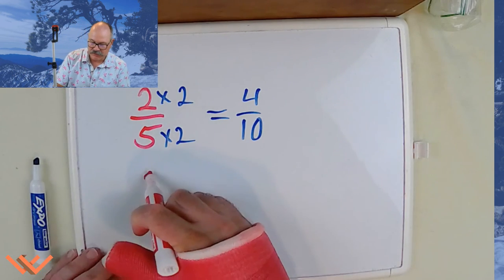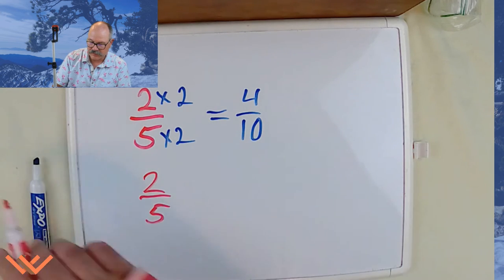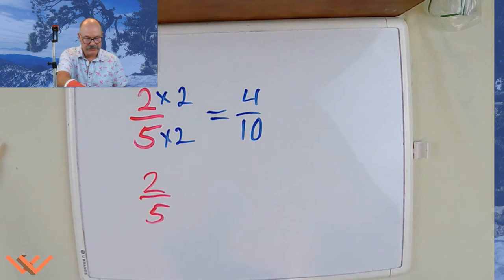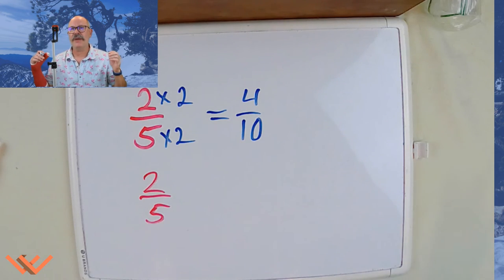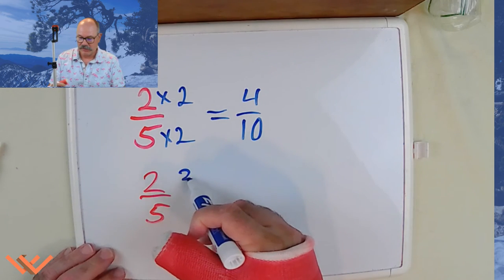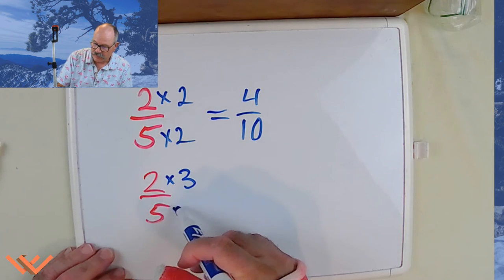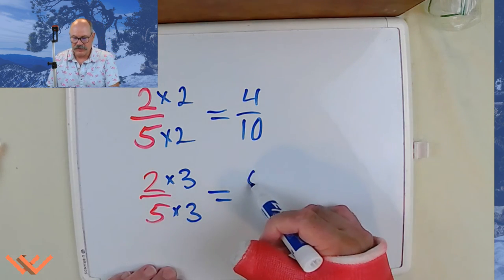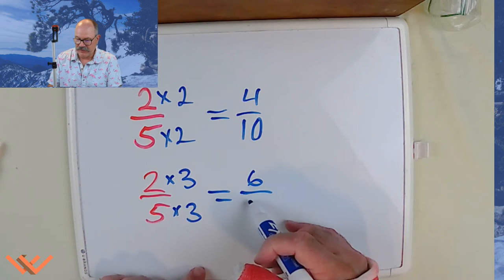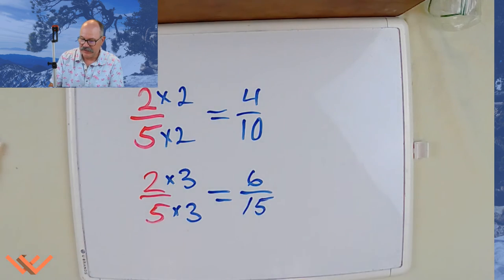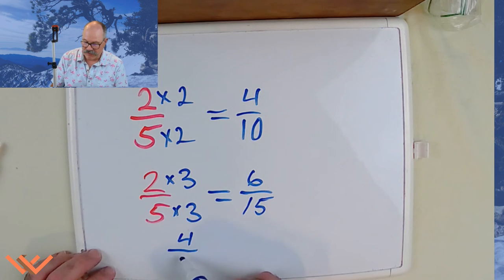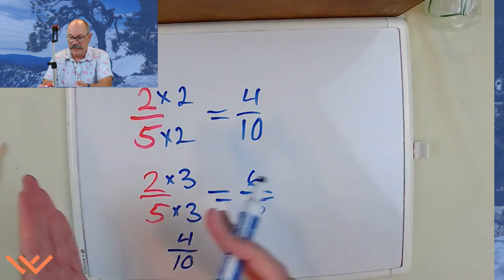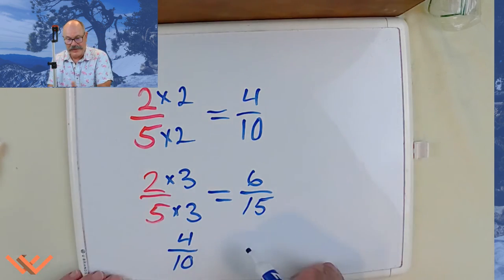However, if we come back down here, we're going to use the same fraction. So it's two fifths, and we multiply it by, and that's essentially a one. Let's say it's three times three, top and bottom. And that is equal to two times three is six, and five times three is fifteen.